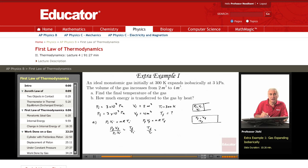Now PF and PI are the same, VF is twice VI, so this is simply 2. This means that TF is 2 TI. Since TI is 300, this is just 600 degrees Kelvin.